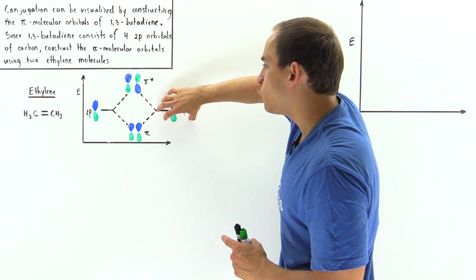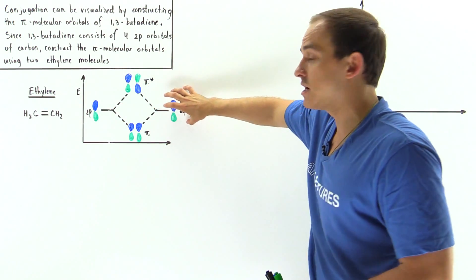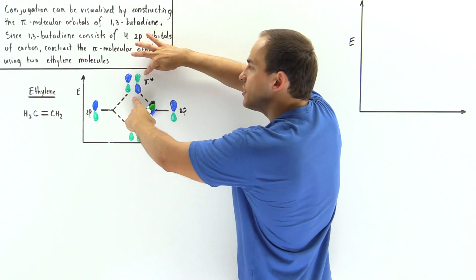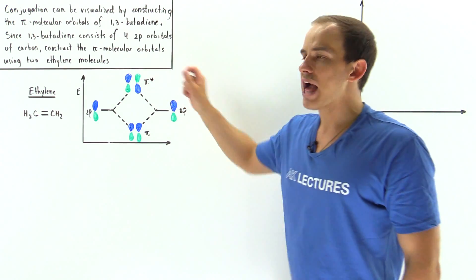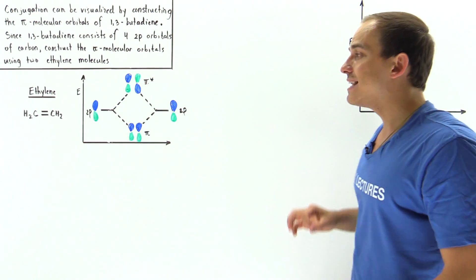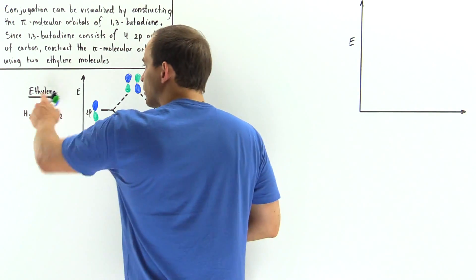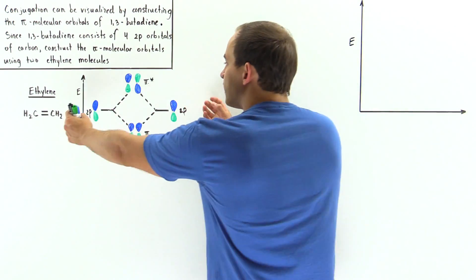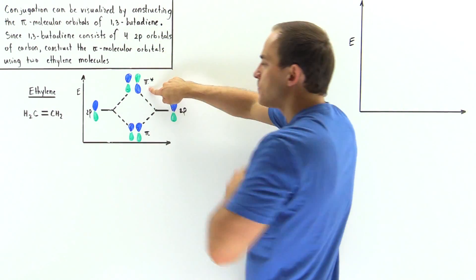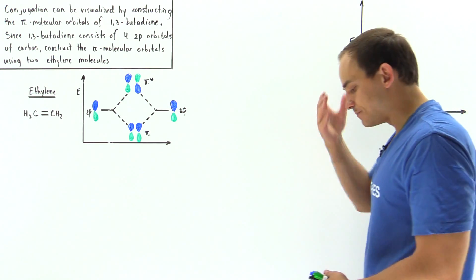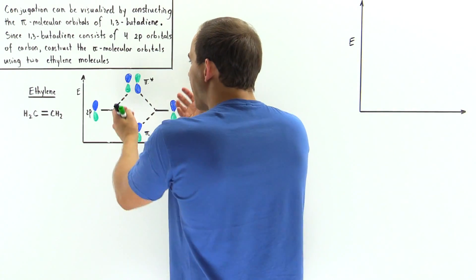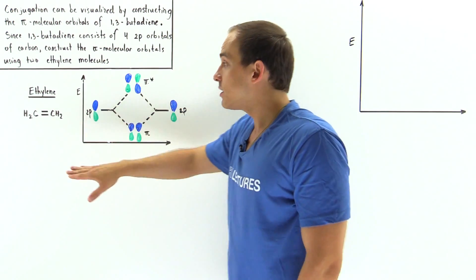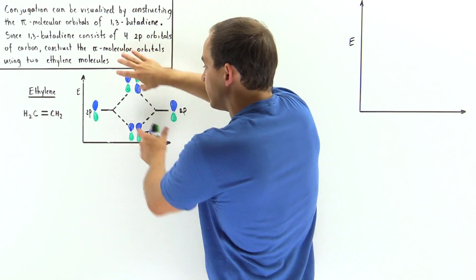However, if one 2p orbital flips — if one is positive and the other becomes negative — when these wave functions of opposite sign combine, they cancel one another out and form a node in the middle, increasing the energy of that pi star anti-bonding orbital. So the pi bond in ethylene is formed by combining 2p orbitals to produce bonding and anti-bonding molecular orbitals — pi and pi star.